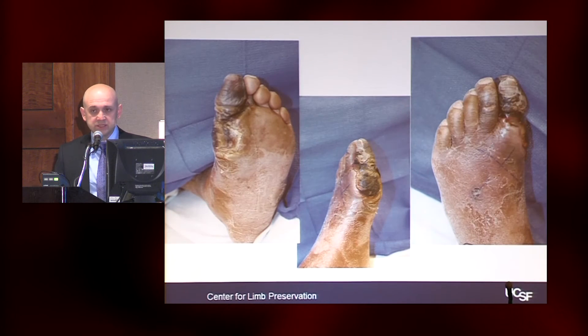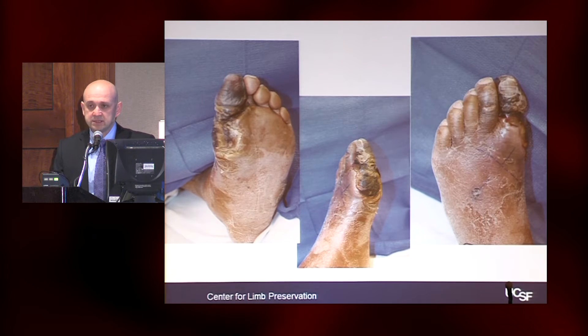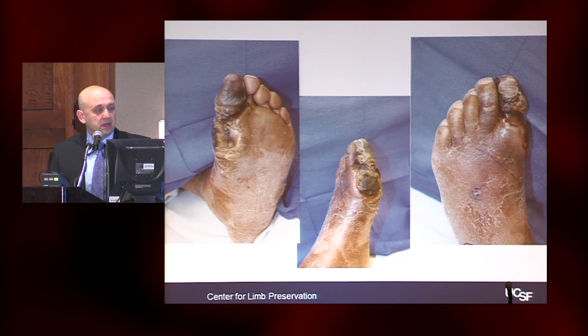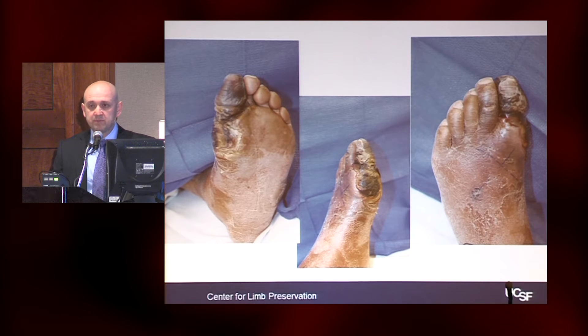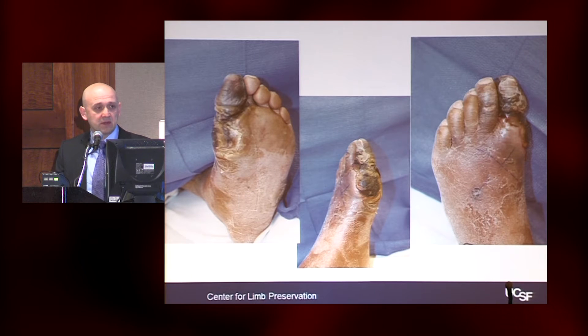The second major risk factor for amputation is obviously critical limb ischemia — gangrene. And if you don't adequately and appropriately revascularize this patient in a timely manner, the foot will be lost.